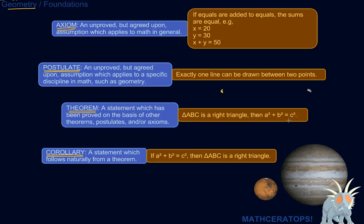We know it's true not just because we're all assuming it's true, but because it's been proven on the basis of other things. And so now we can all use it, which is very fun. A corollary is a statement which follows naturally from a theorem.